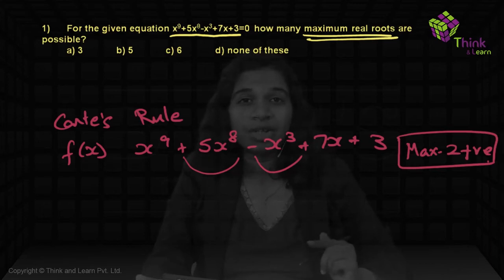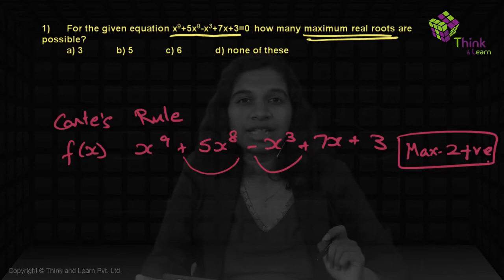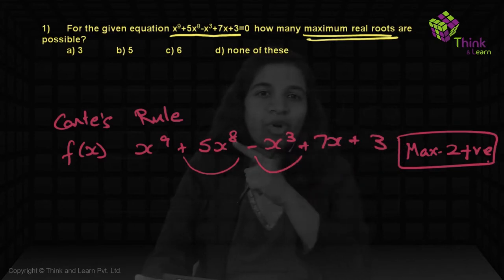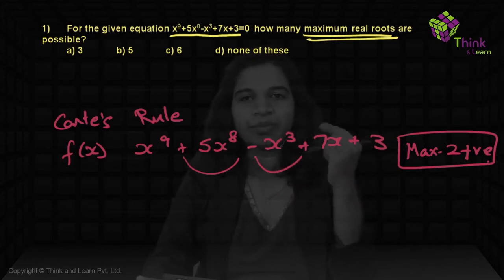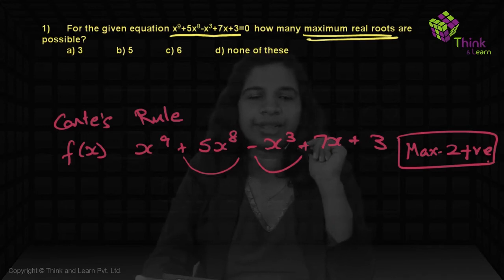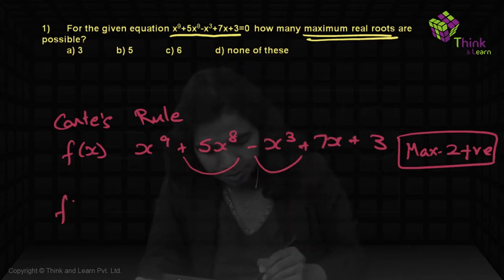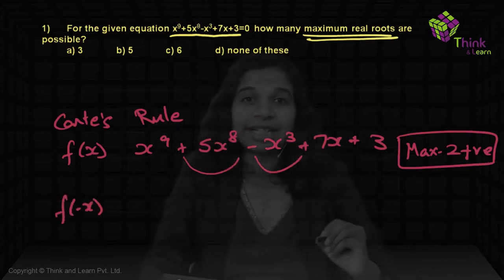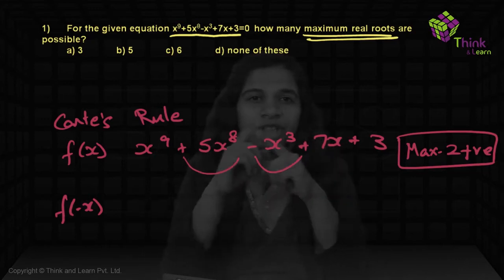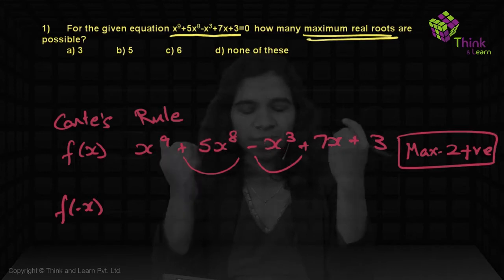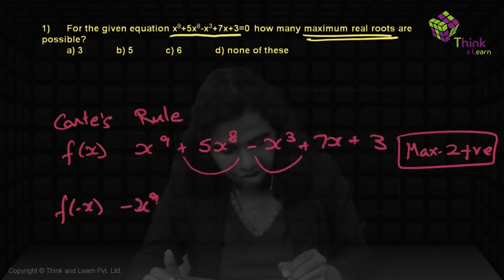For negative roots, we need to find f(−x). Make sure that whenever you're writing this equation and checking sign changes, it's always in descending powers — here it was already given in descending powers. f(−x) means all odd powers become negative. Whatever is an even power stays as it is; odd power signs will change.